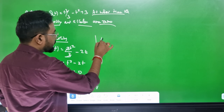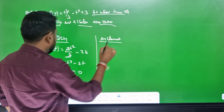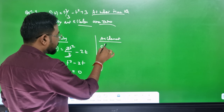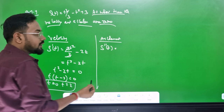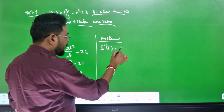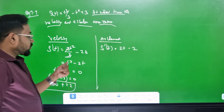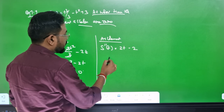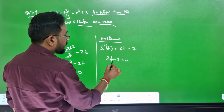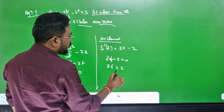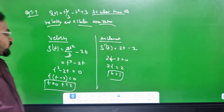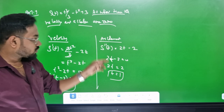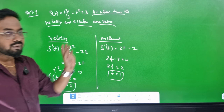Then the acceleration: acceleration is the second derivative, S double dash. Differentiate t squared minus 2t to get 2t minus 2. Set 2t minus 2 equal to 0: 2t equals 2, so t equals 1. This is a 3 mark question. Find at what time the velocity and acceleration are zero.